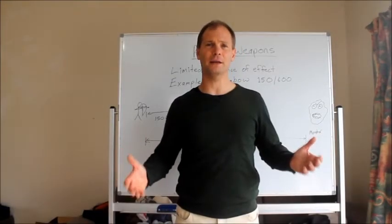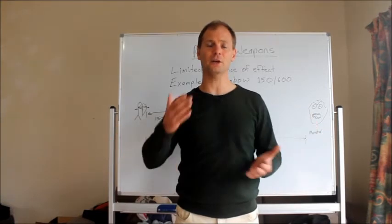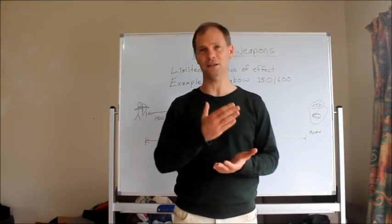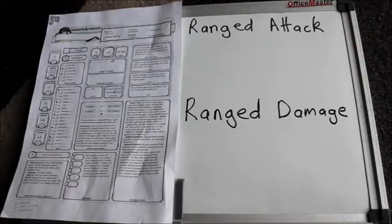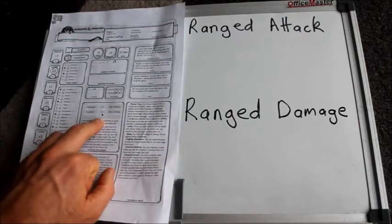Here are some examples of how to make the ranged weapon attack. That includes making the attack roll and the damage roll. For this example I'm going to use the rogue character that I have here. The rogue has a short bow. Its attack modifier is plus five. It is listed right here.